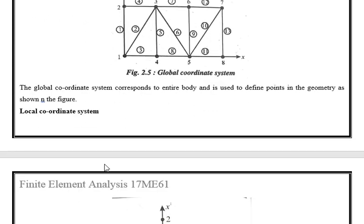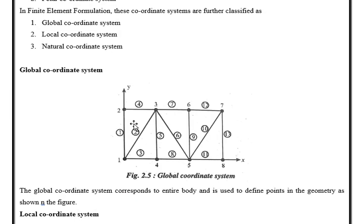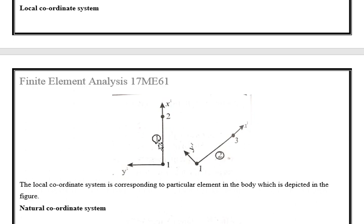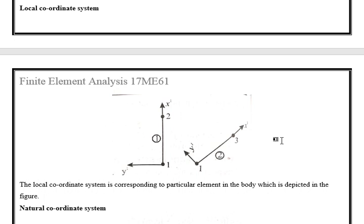Coming to the local coordinate system, here a particular element is assigned with coordinates. There are a number of elements in the earlier figure. If we consider a separate element — element 1, element 2, etc. — each element can be assigned with coordinates x prime and y prime. So if each element is represented in its own coordinates, that type of coordinate system is called the local coordinate system. In summary: if the entire geometry is represented, it is global; if a particular element is represented, it is local.